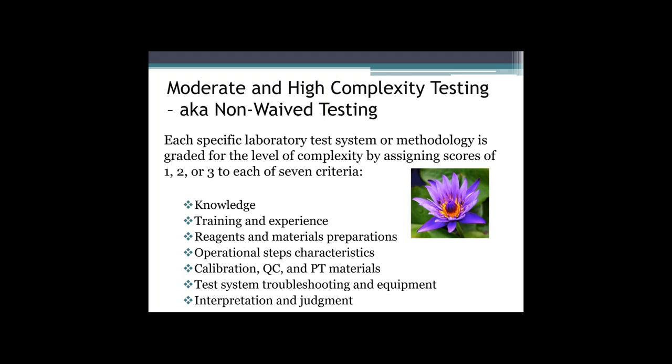When the FDA determines test complexity, it is based on the manufacturer's instructions on how the test should be performed from start — or collection — to finish — the final result verification. Tests can only be defined by the complexity that they were given if these instructions are followed exactly. When sites deviate from manufacturer's instructions, the complexity assigned by the FDA is null and void. When facilities develop their own test procedure or choose to modify an existing FDA-approved procedure, the test automatically falls into the high-complexity category and is subject to CLIA's most stringent requirements. These are called laboratory-developed tests, or LDTs, and modified tests, respectively.